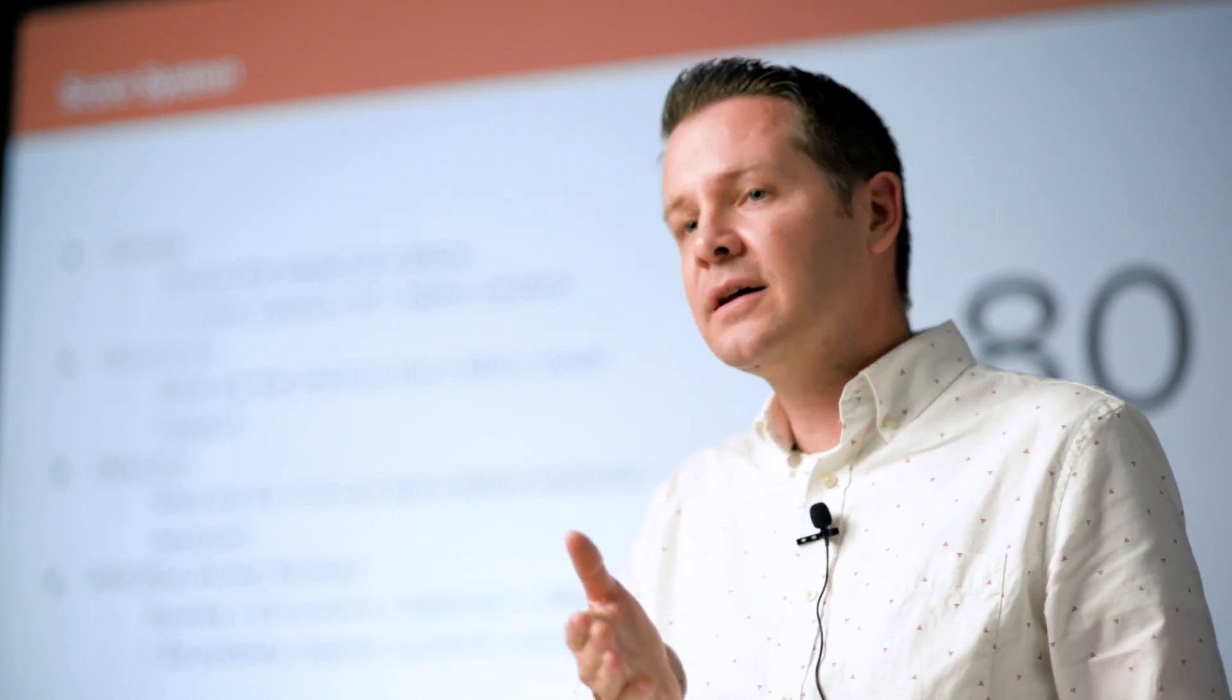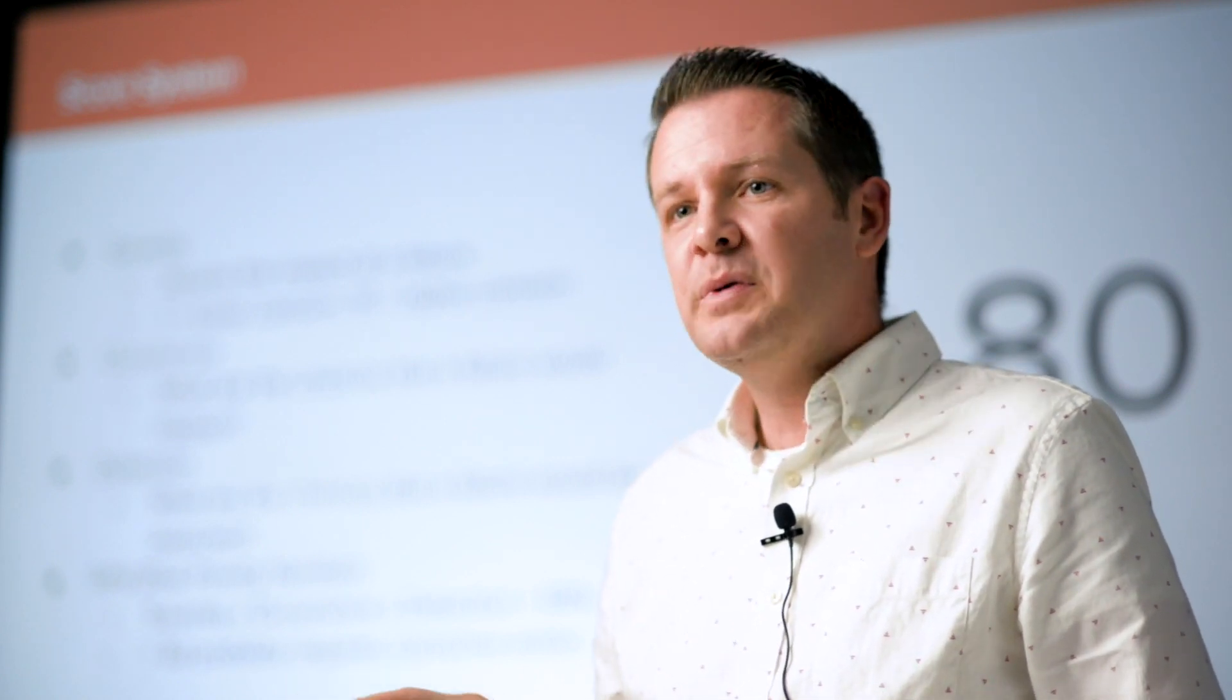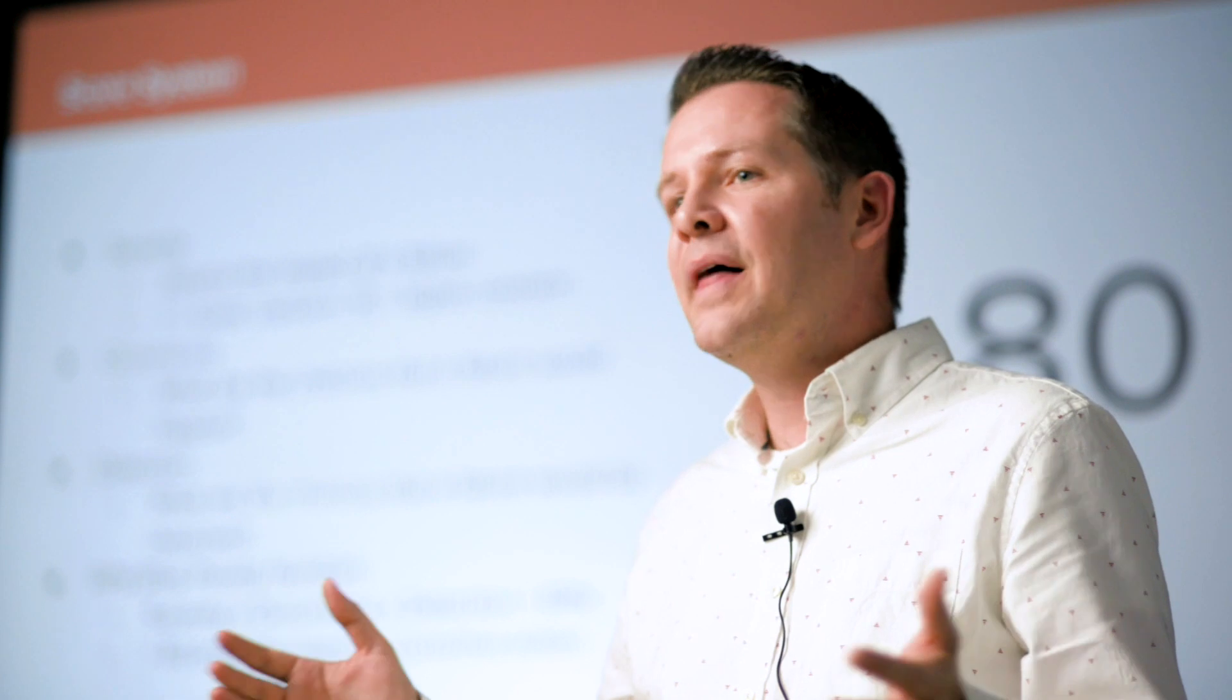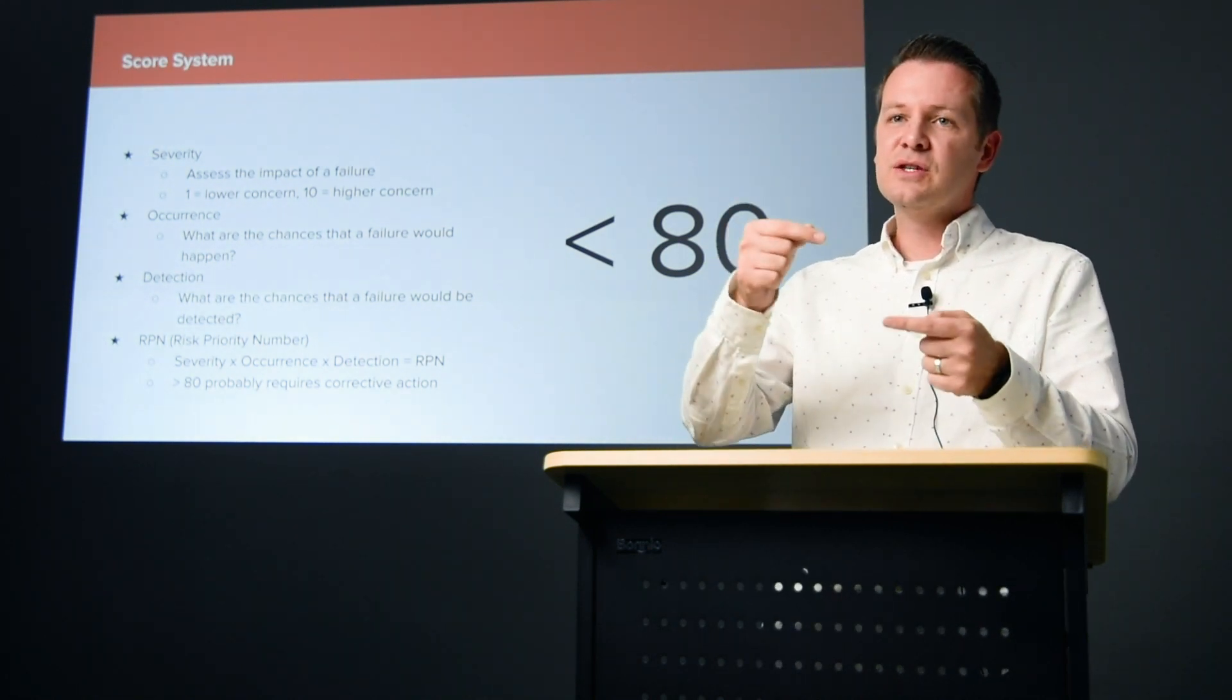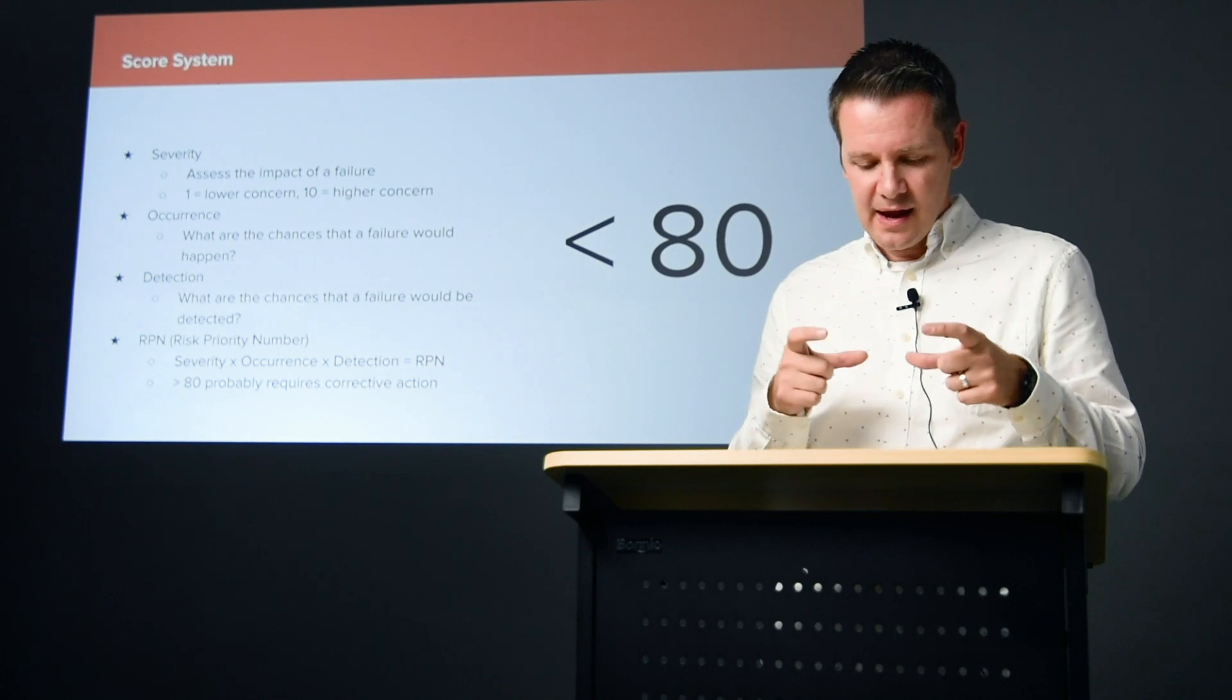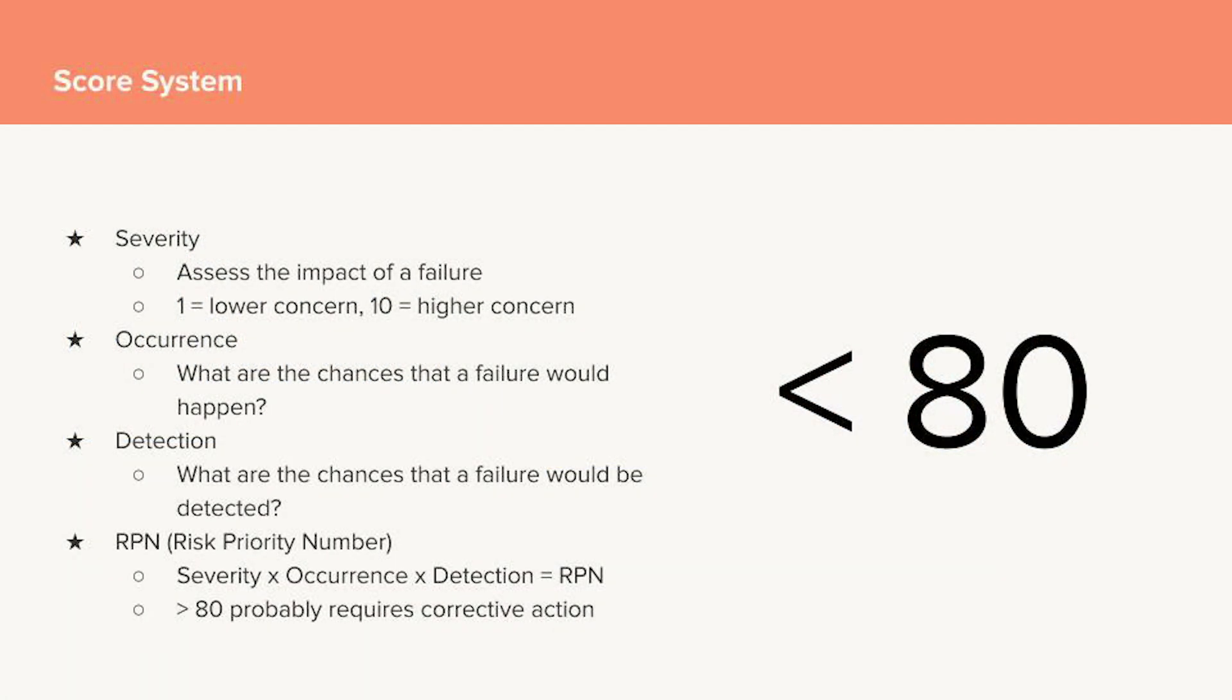Detection: what are the chances that it would be detected, that we would even know the thing went wrong? Would it be obvious, or could it be missed? We take these three factors and multiply them together into an RPN or Risk Priority Number. It's severity multiplied by occurrence multiplied by detection.